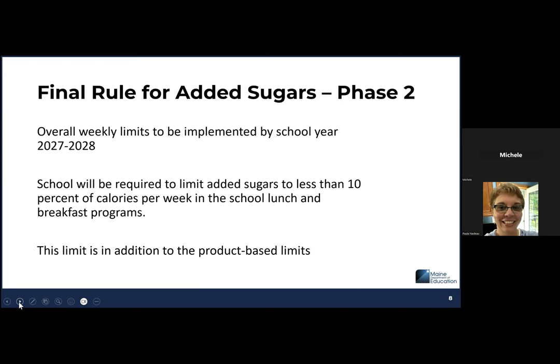Phase two of this final rule goes into effect over school year 27-28. Schools will be required to limit added sugars to less than 10% of your calories per week in the school lunch and school breakfast programs. This limit is in addition to the product-based limits.